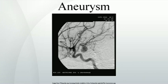A false aneurysm, or pseudo-aneurysm, is a collection of blood leaking completely out of an artery or vein, but confined next to the vessel by the surrounding tissue. This blood-filled cavity will eventually either thrombose enough to seal the leak, or rupture out of the surrounding tissue. Such aneurysms can be caused by trauma that punctures the artery, such as knife and bullet wounds, as a result of percutaneous surgical procedures such as coronary angiography or arterial grafting, or use of an artery for injection.